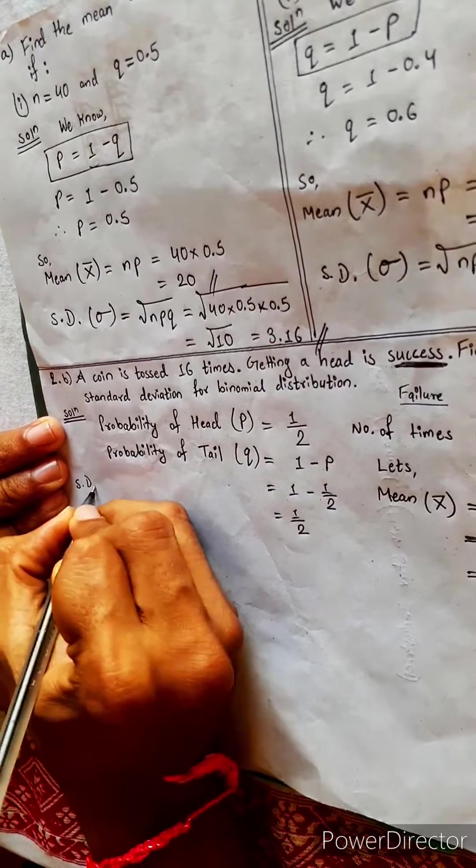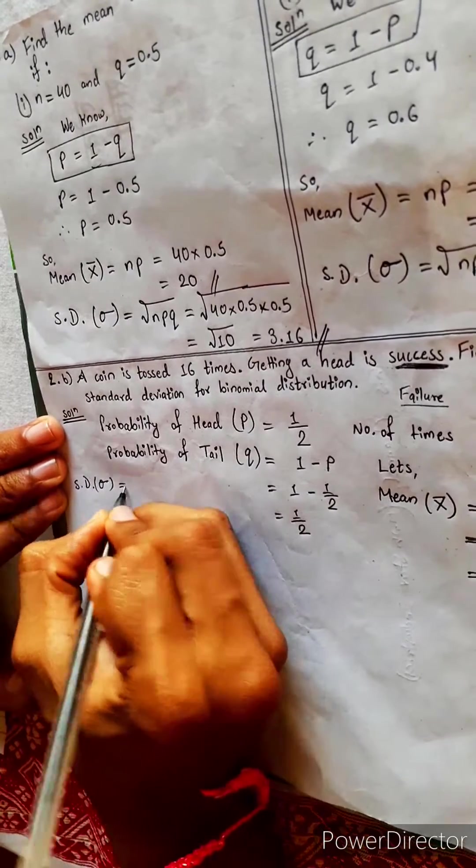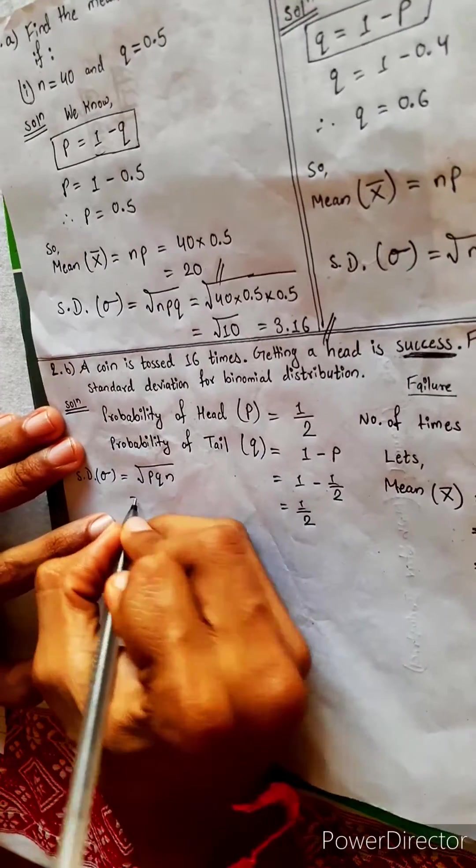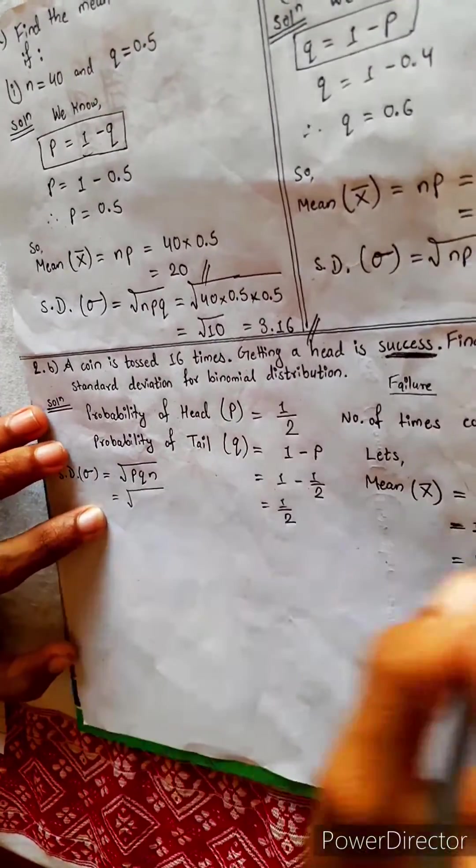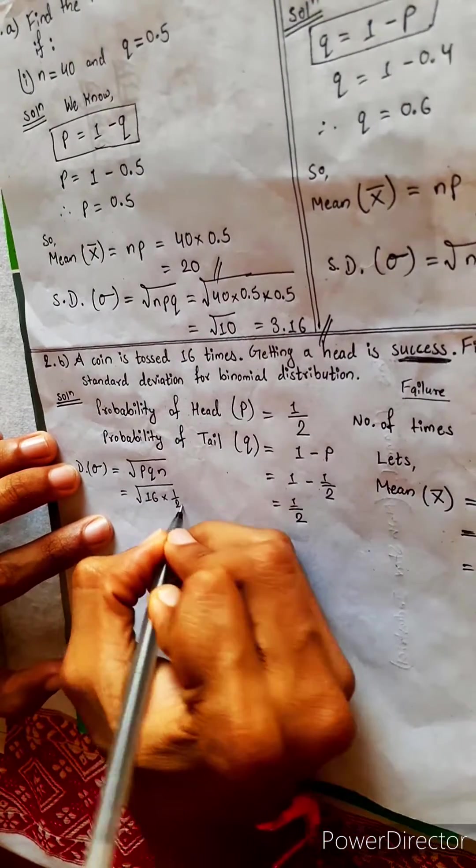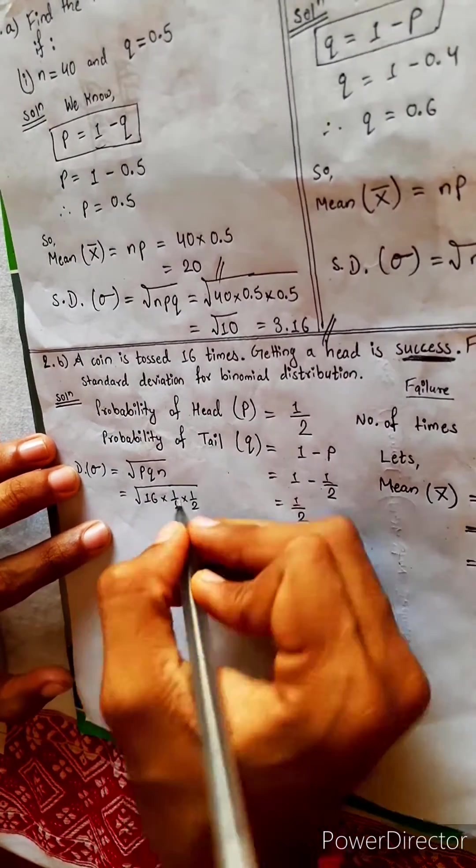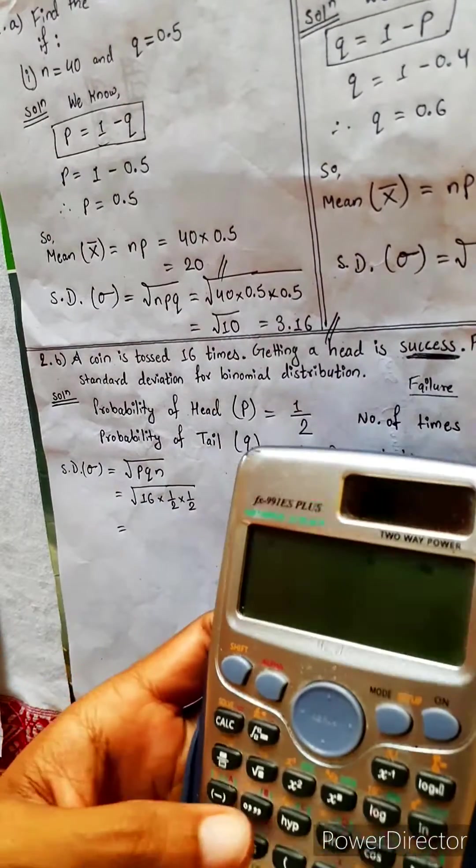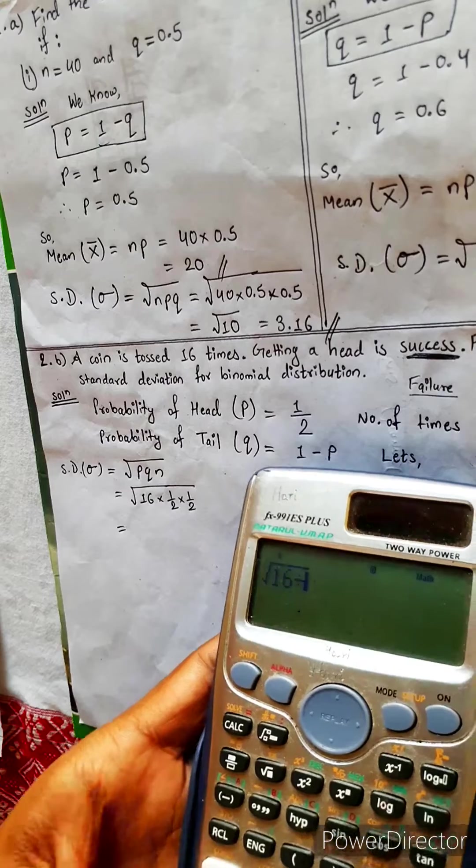Let's find standard deviation, represented by sigma. This equals root npq. N equals 16, so 16 into p times q, which is 1/2 times 1/2. 16 by 4 equals 2.